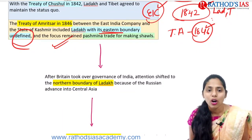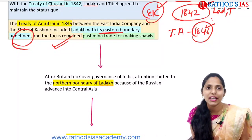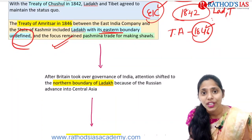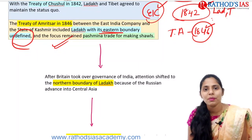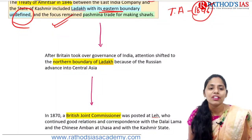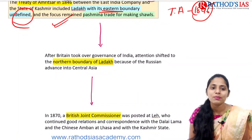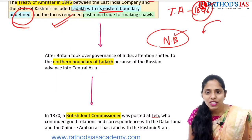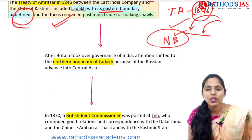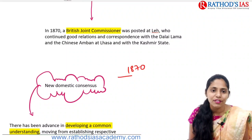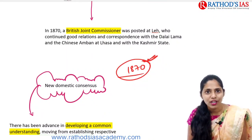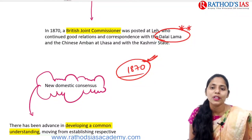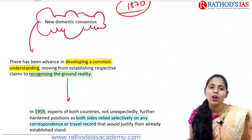The Treaty of Amritsar was mainly focused on Pashmina trade. Pashmina is a very high-quality, fine wool from Kashmir, costing over ₹15,000 per shawl. After Britain took over the governance of India, attention shifted to the northern boundary of Ladakh because Russia was advancing towards Central Asian countries. Later in 1870, the British Joint Commissioner posted at Leh maintained correspondence with the Dalai Lama, who is also an important issue in India-China relations.